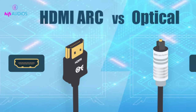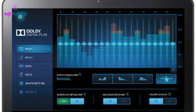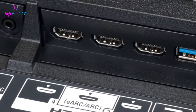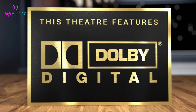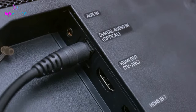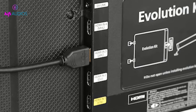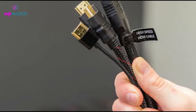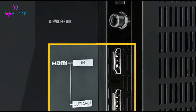HDMI ARC is a better option. It supports Dolby Digital Plus, Dolby Atmos, and up to 7.1 channels of uncompressed audio, while Digital Optical only supports Dolby Digital and up to 5.1 channels of uncompressed audio. HDMI ARC also offers features like CEC, in which your TV remote can control the volume levels of a connected soundbar or AV receiver.